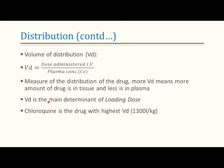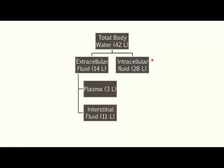The formula for volume of distribution is the dose administered by IV route divided by the plasma drug concentration. Vd is the main determinant of loading dose. Chloroquine has the highest volume of distribution at 1300 L/kg. A typical body contains 42 liters of water, present as extracellular fluid (plasma + interstitial fluid) or intracellular fluid.